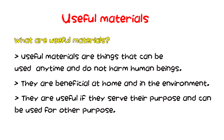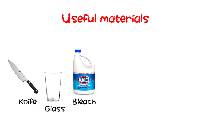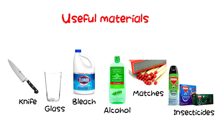Let's now go to the useful materials found at home, in school, and in the community. Useful materials are things that can be used anytime and do not harm human beings. They are beneficial at home and in the environment. They are useful if they serve their purpose and can be used for other purposes. Examples of useful materials found at home, school, and the community are knife, glass, bleach, alcohol, matches, and insecticides.